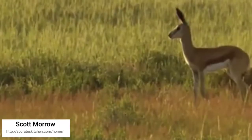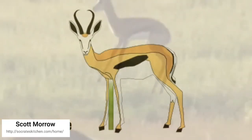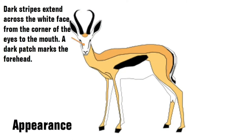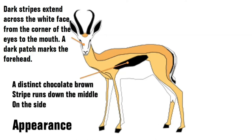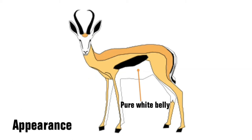To help you understand this a little bit more, we're going to focus our attention on a single species. The Springbok is the national symbol of South Africa. It has dark stripes that extend across the white face from the corner of the eyes to the mouth, and a dark patch on the forehead. It has a distinct chocolate brown stripe that runs down the middle and on the side with a pure white belly.